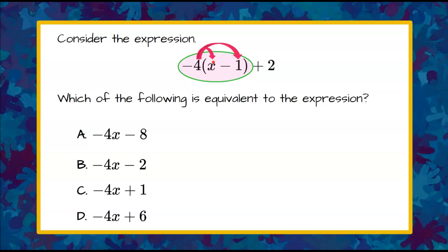So negative 4 times x is negative 4x. Negative 4 times negative 1 is positive 4, and then we need to add 2.